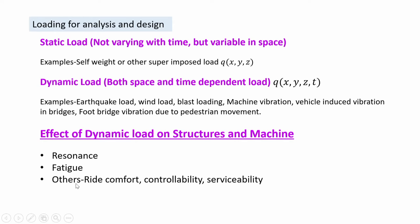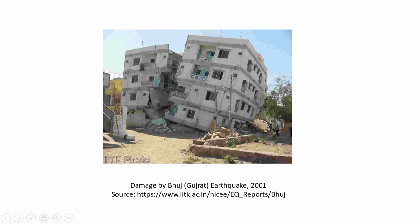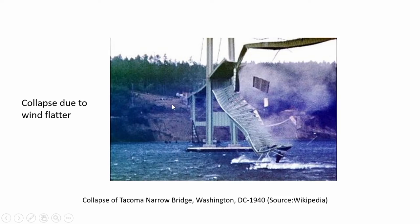We know the effects of vibrations and these are seen in various cases. The earthquake effect is seen damaging buildings where the earthquake was severe. One example is the Bhuj earthquake which happened in 2001. Another example is wind causing flutter in structures, leading to aerodynamic instability. The bridge here is an example of a suspension bridge constructed in 1940 in Washington that collapsed due to flutter at a critical wind speed.